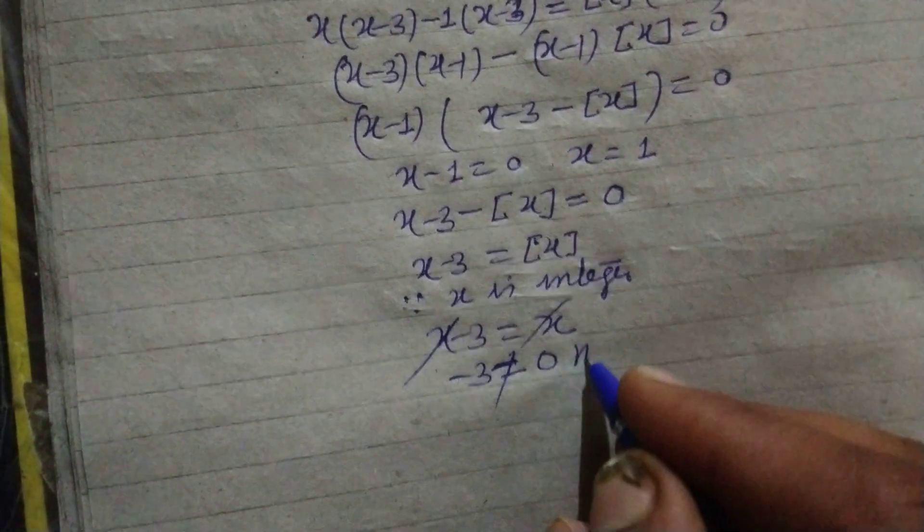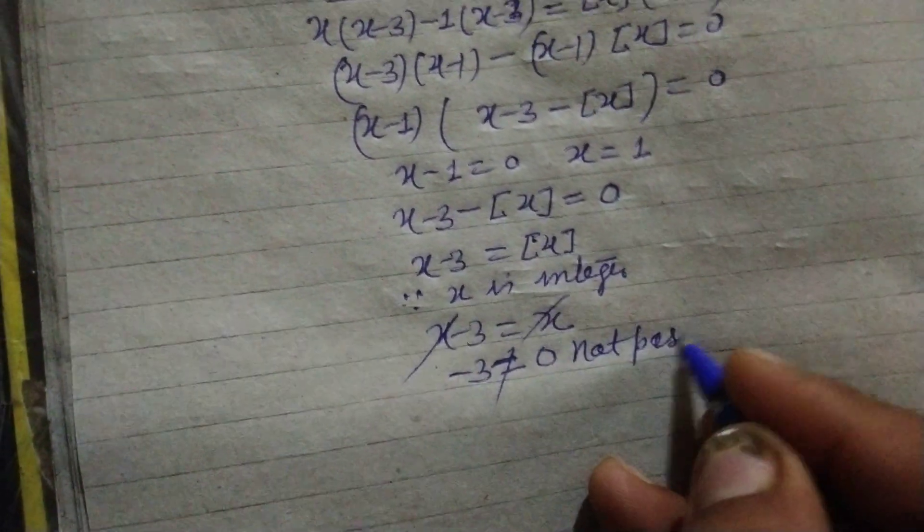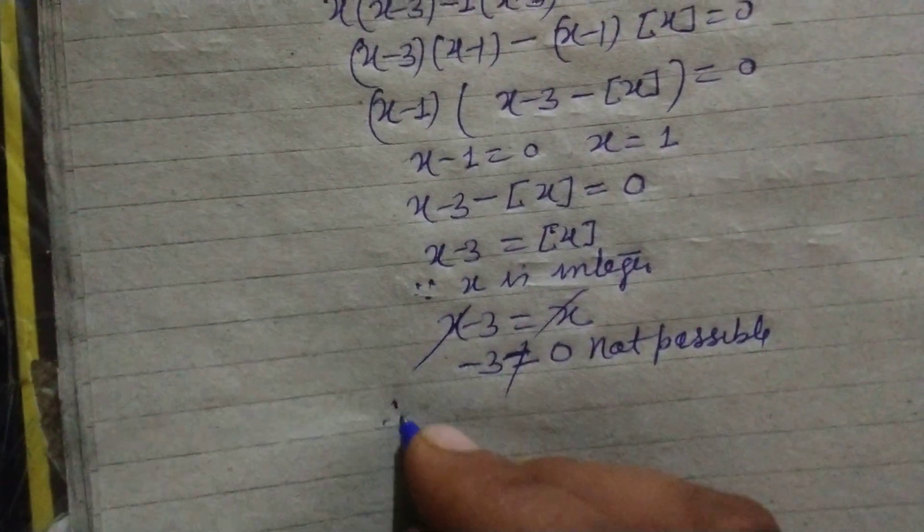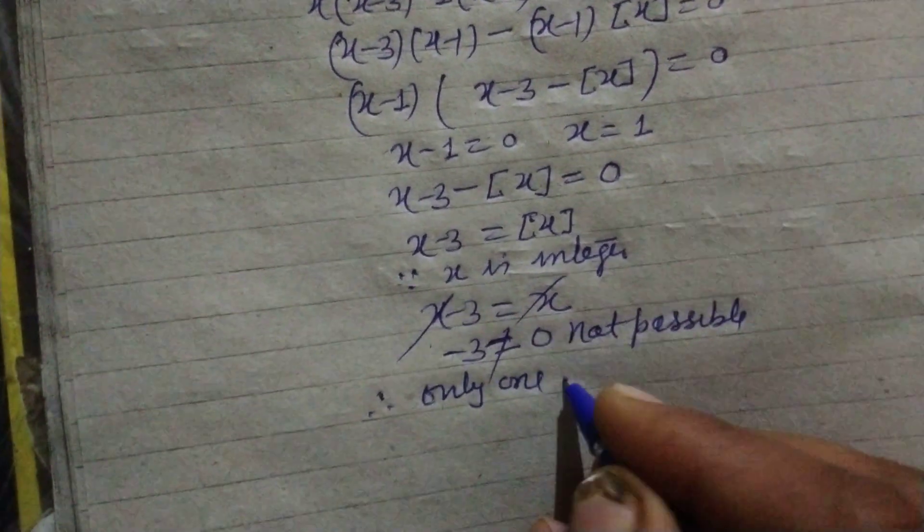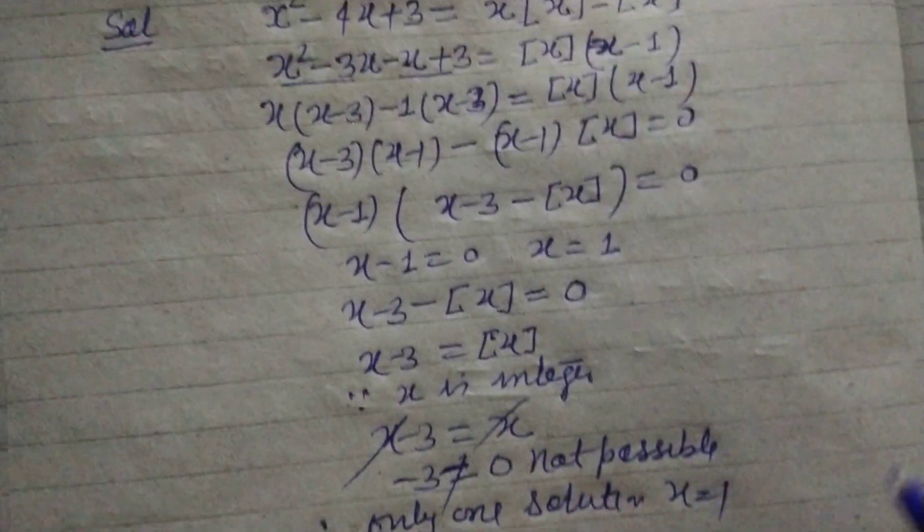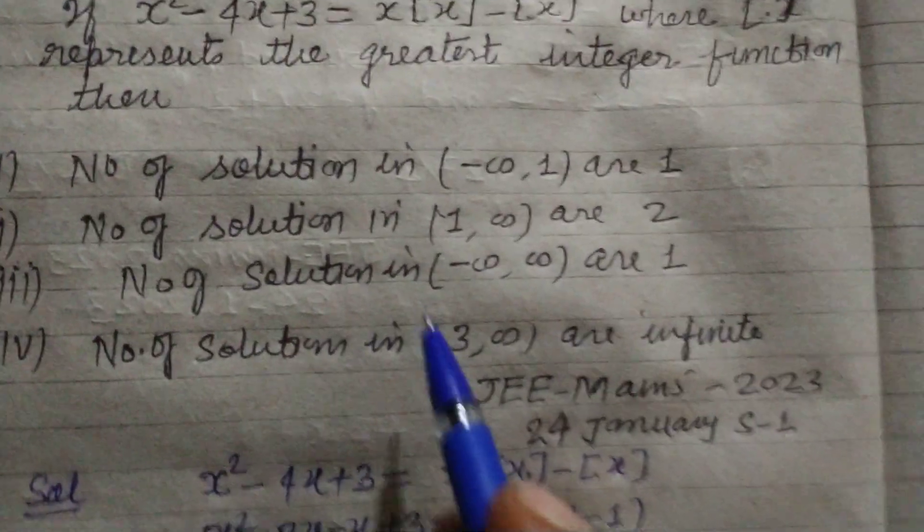So this given equation has only one solution. Therefore, only one solution x = 1, and this lies in which interval?